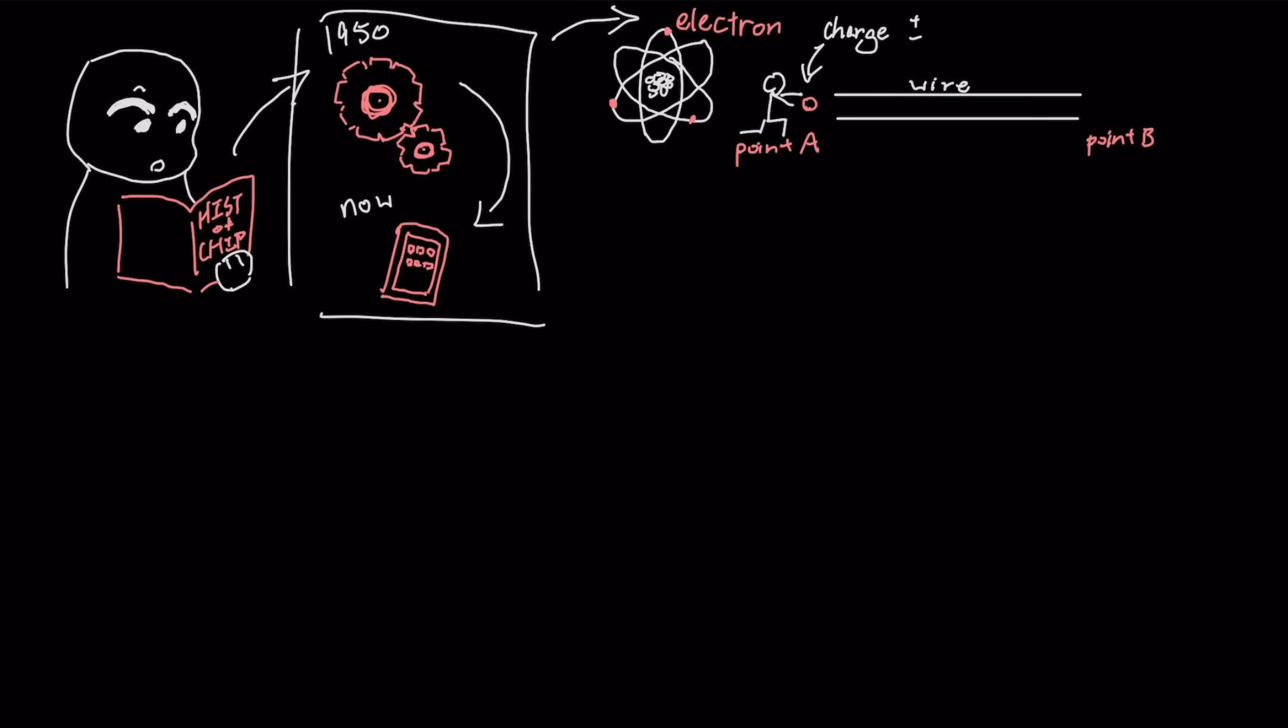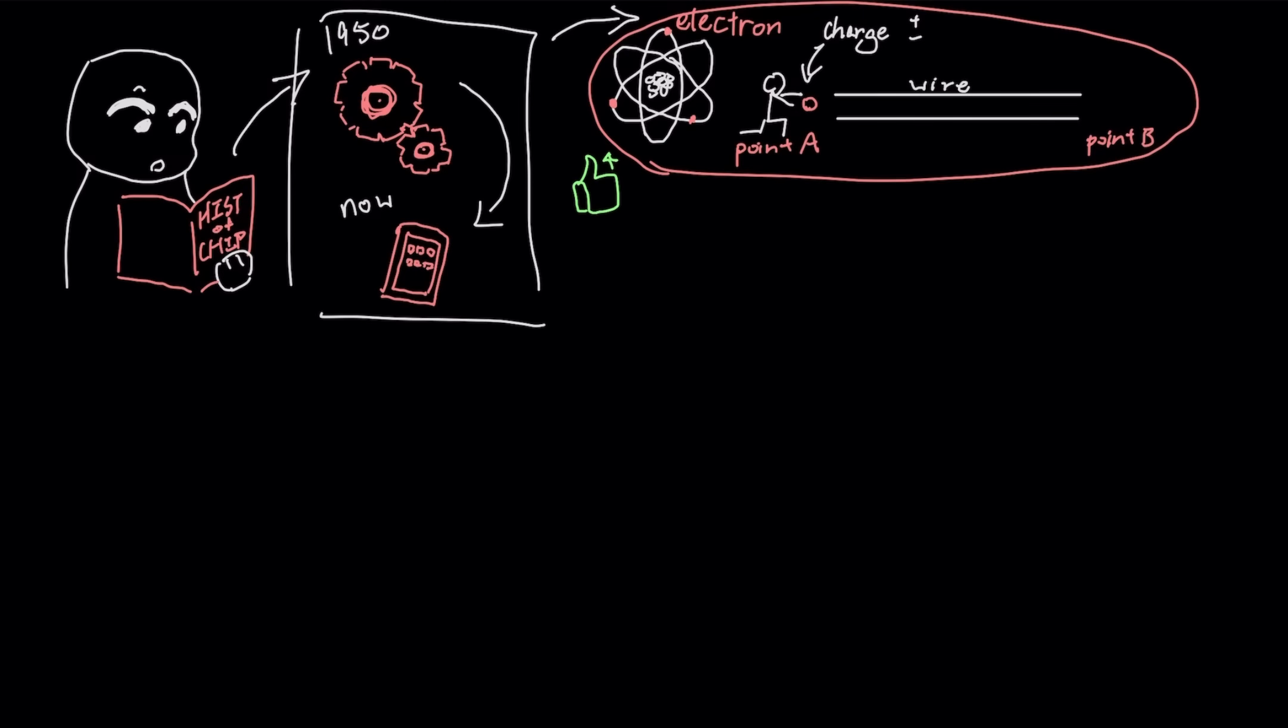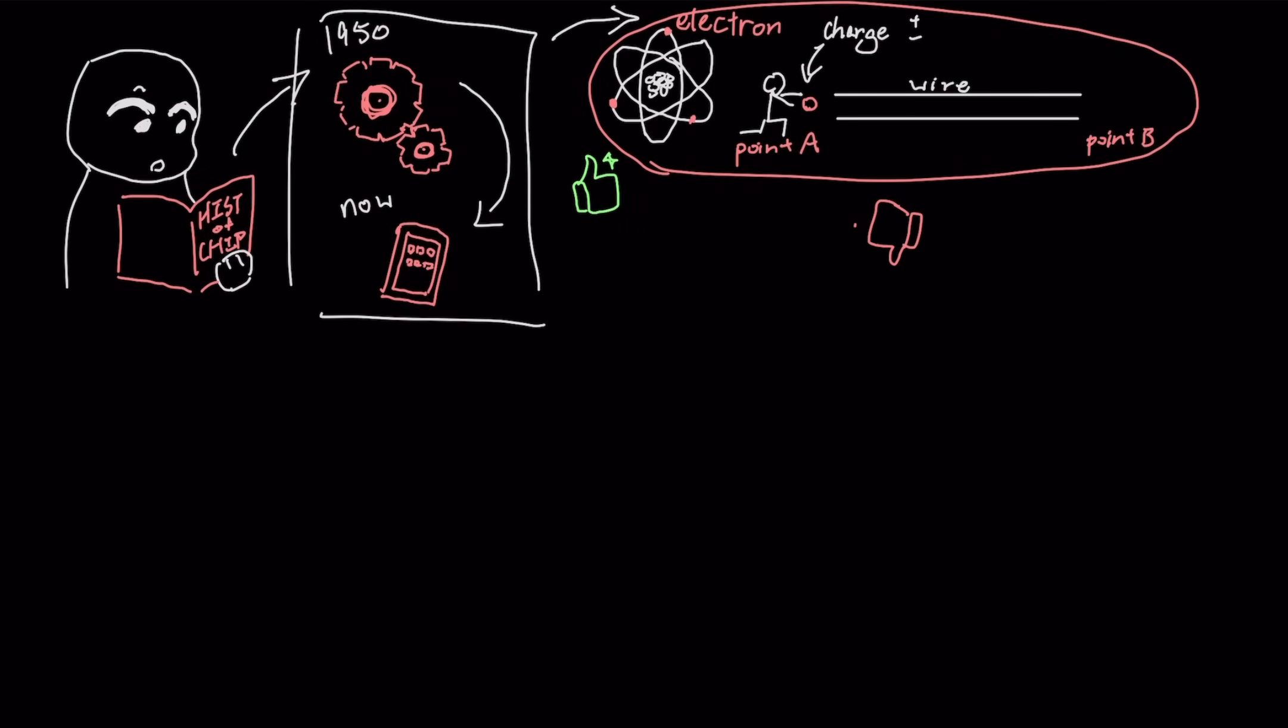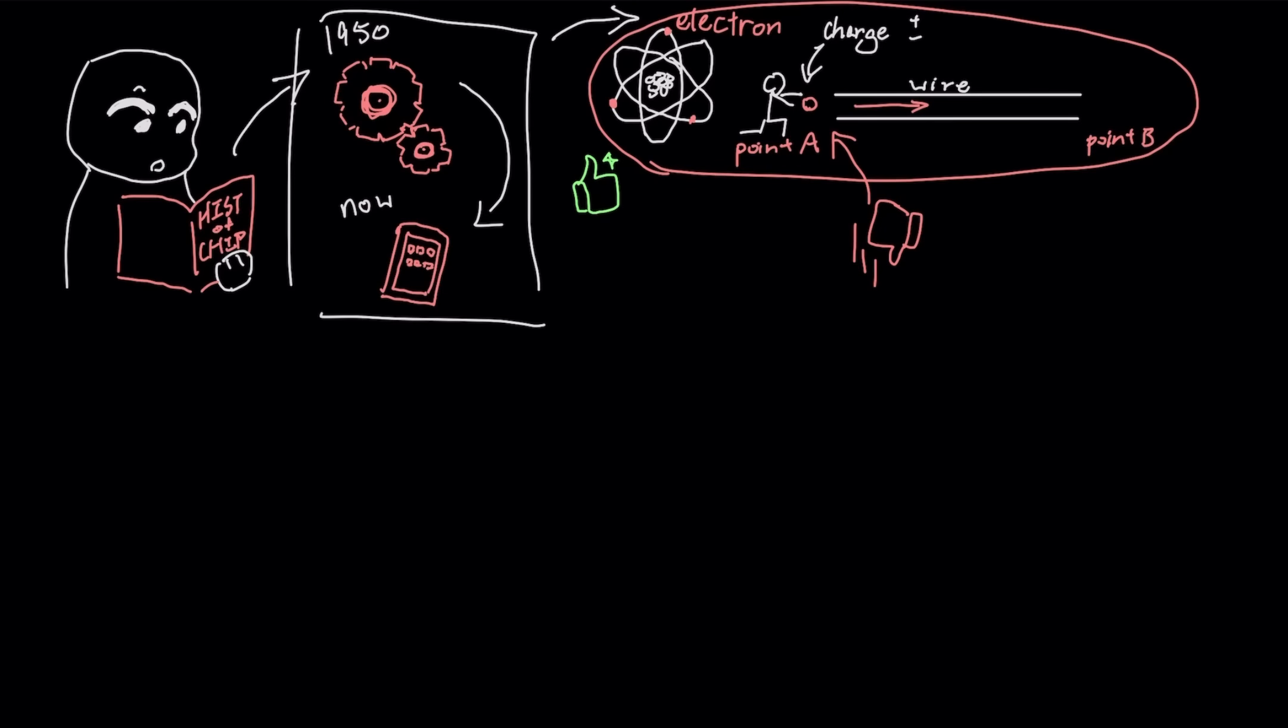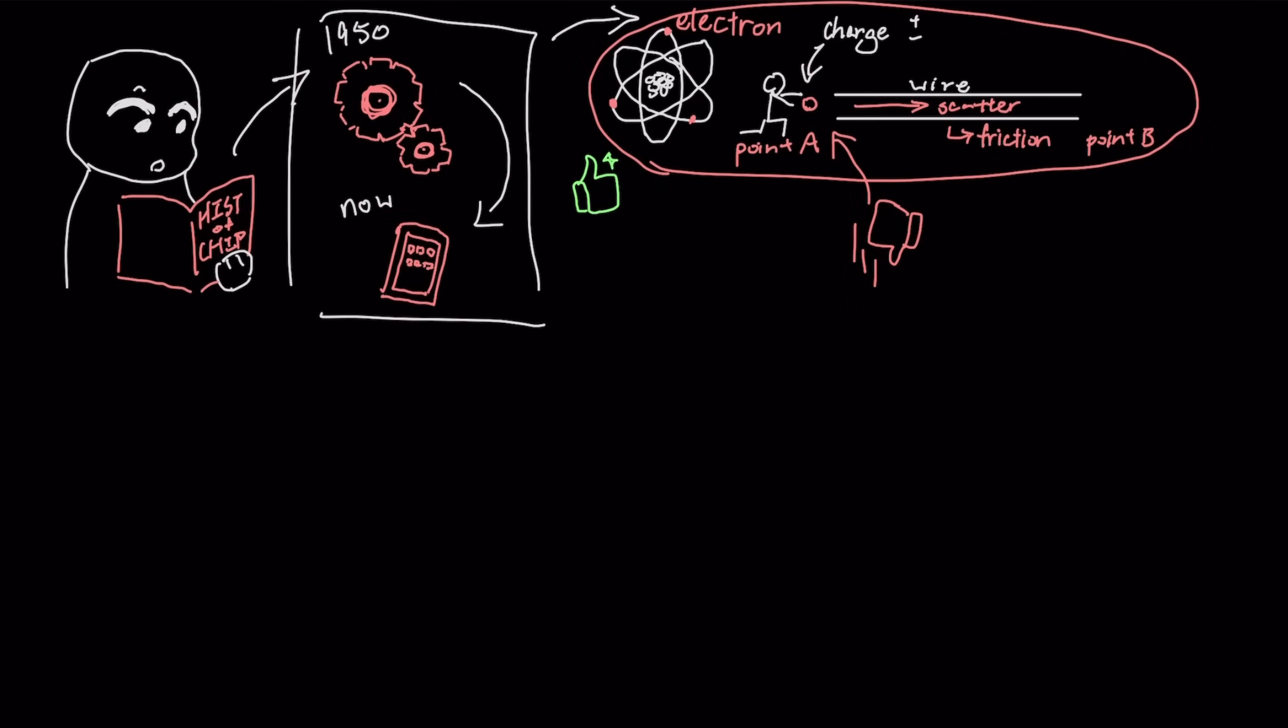This method is based on the electrical charge of the electron. While it has served us incredibly well for decades, it comes with an unavoidable physical cost. When you force electrons to move through a circuit, they scatter and create friction. That friction turns into heat, which is exactly why your phone gets warm when you ask it to do something difficult.